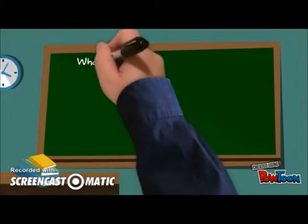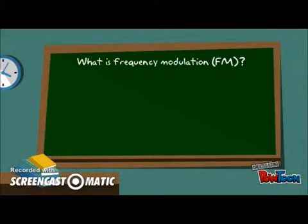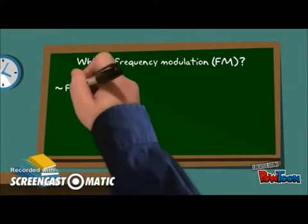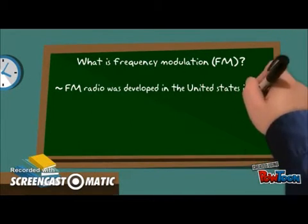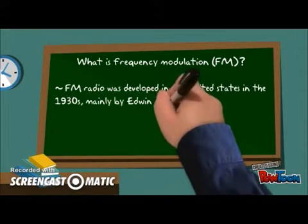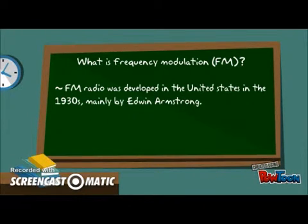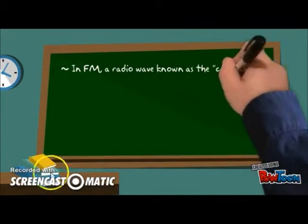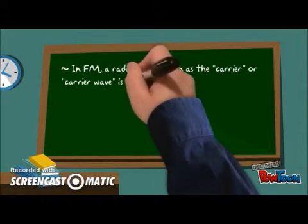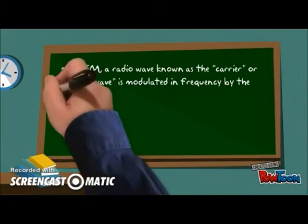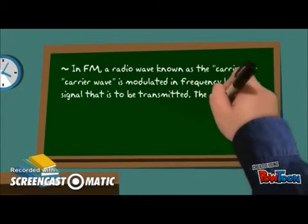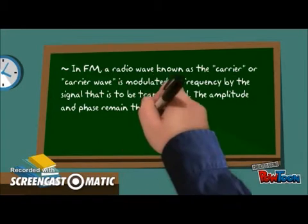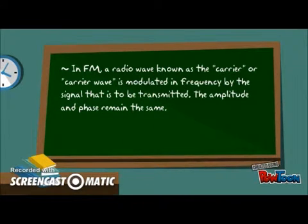Now we proceed to frequency modulation. The first frequency modulation radio was developed in the United States in 1930, mainly created by Edwin Armstrong. In frequency modulation, a radio wave known as the carrier or carrier wave is modulated in frequency by the signal that is to be transmitted. The amplitude and phase remain the same throughout the whole process.